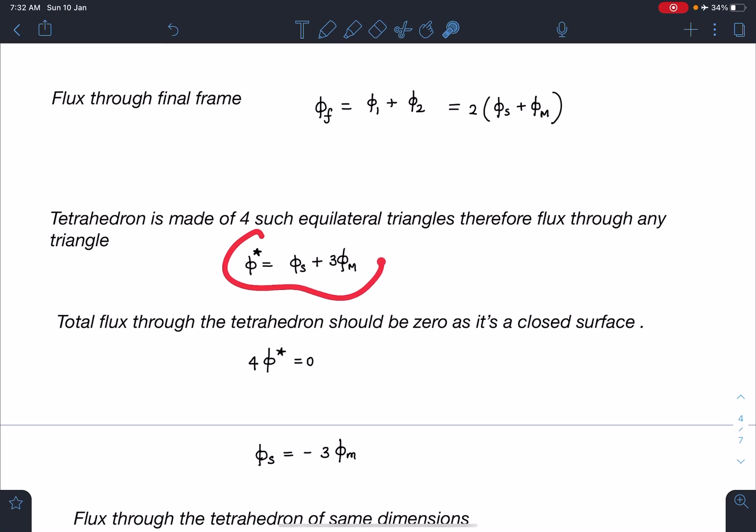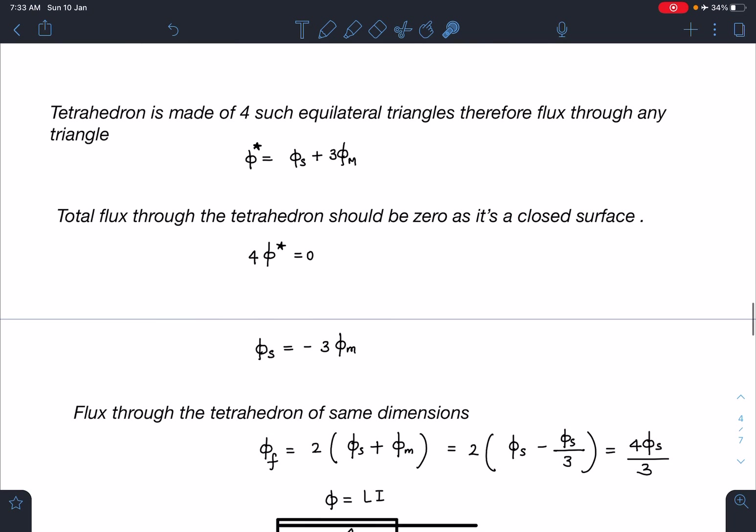This is the flux passing through any one face and there are four such faces so total flux through tetrahedron I can write that is 4φ*. I am calling this as φ* must be zero because it is a closed surface. This is nothing but Gauss theorem for magnetism. From here I am going to get φ* = 0 or I am going to get φ_s = -3φ_m. This value I am going to substitute here and bring everything in terms of φ_s.